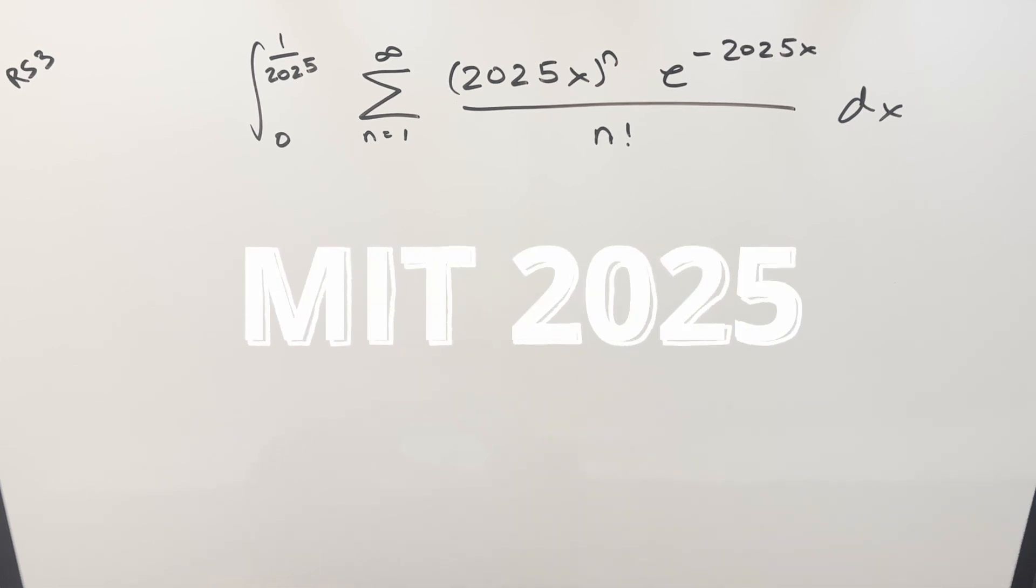We have a nice integral here today from the MIT integration B2025, regular season number three. We have the integral from zero to one over 2025, sum from one to infinity, 2025x to the n, e to the minus 2025x over n factorial dx.